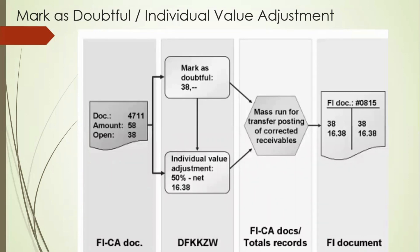The next type is called individual value adjustment. From the FIKA table you get the document number, and that document number has an amount — that is the open item of 38. The total amount is 58, and the individual value adjustment is 50% of the net amount. So 50% of 38 equals 16.38, which is 38 divided by 2.